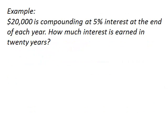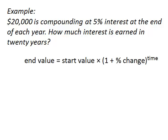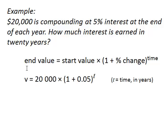So here's that easy question. $20,000 is compounding at 5% interest at the end of each year. How much interest is earned in 20 years? Well that's our formula. So our end value is what we're trying to calculate. That's our V, our unknown. Our start value is 20,000. We're told that.